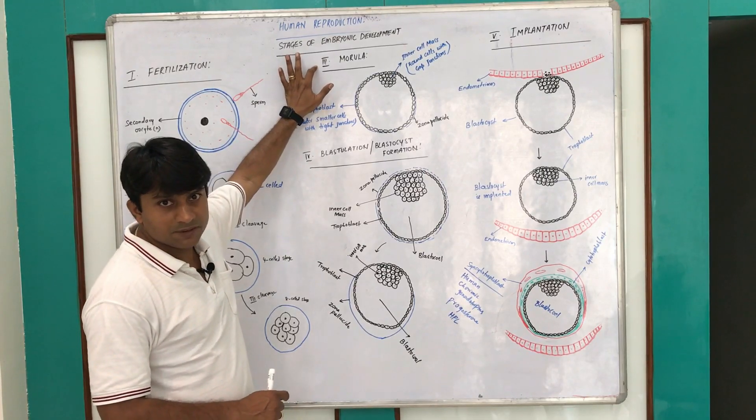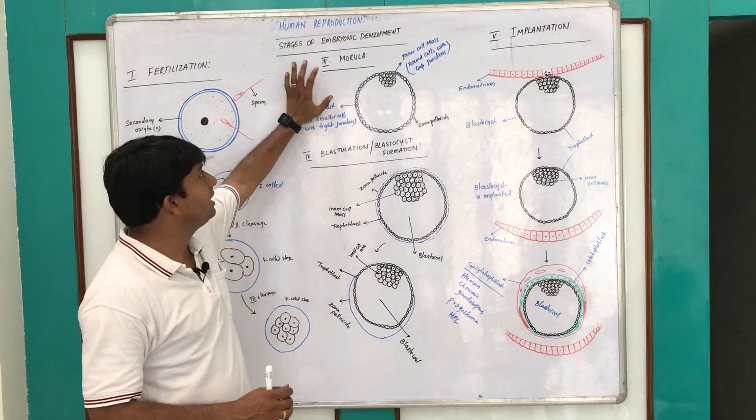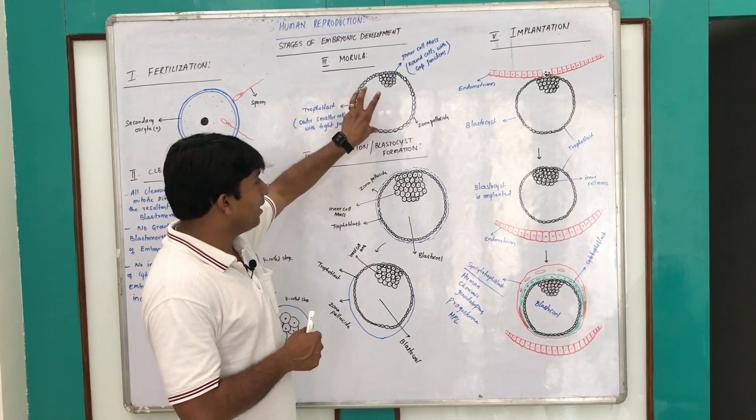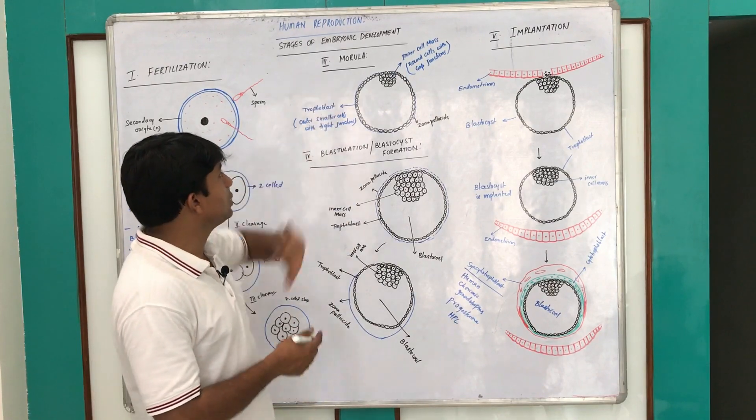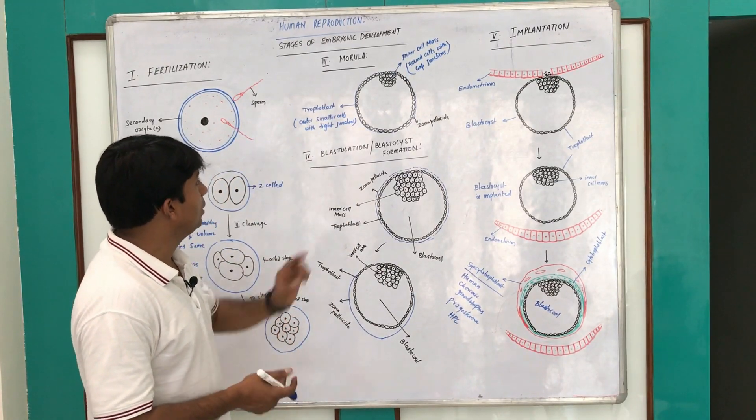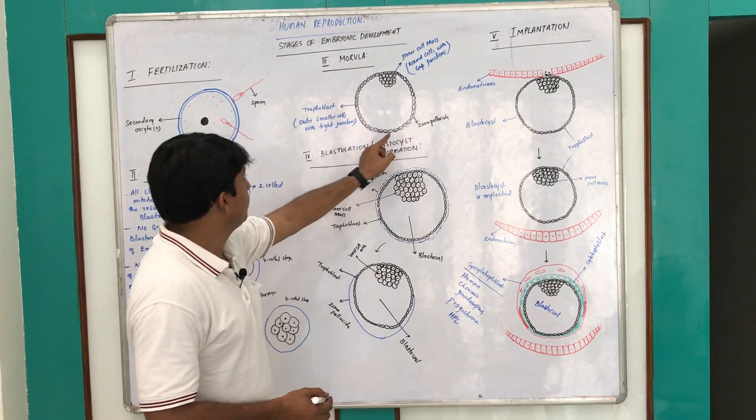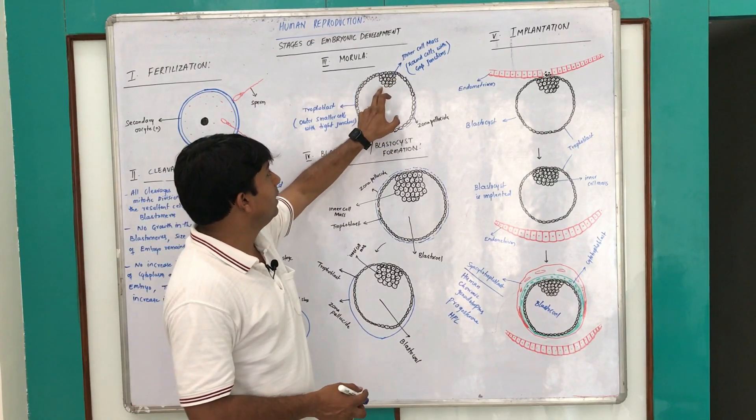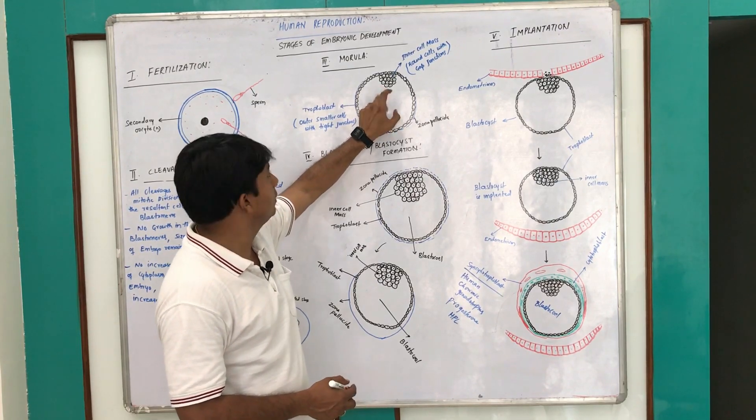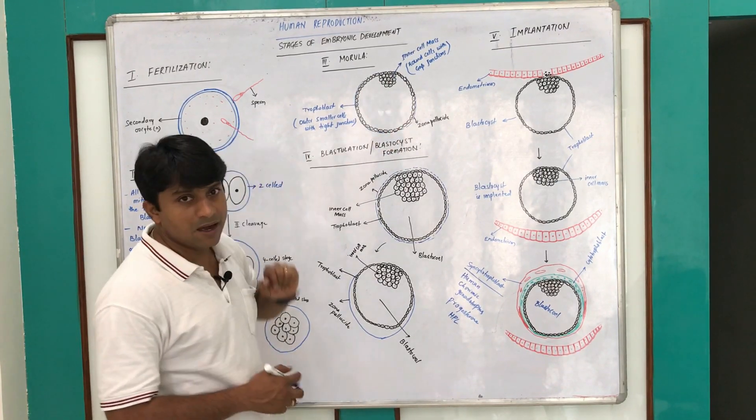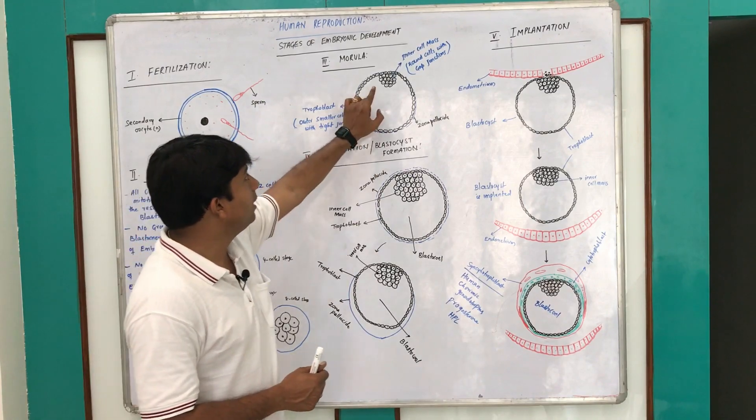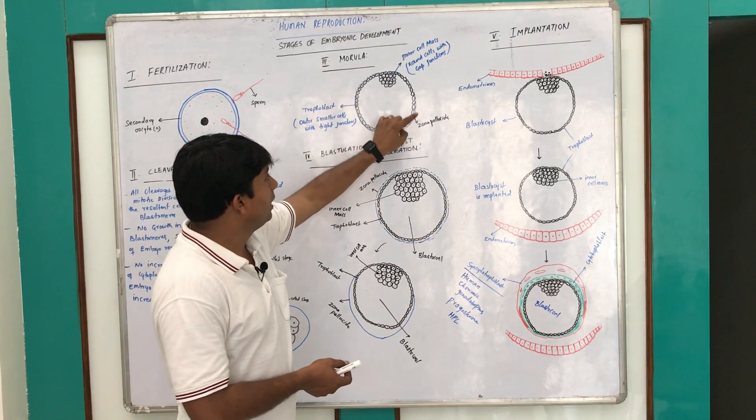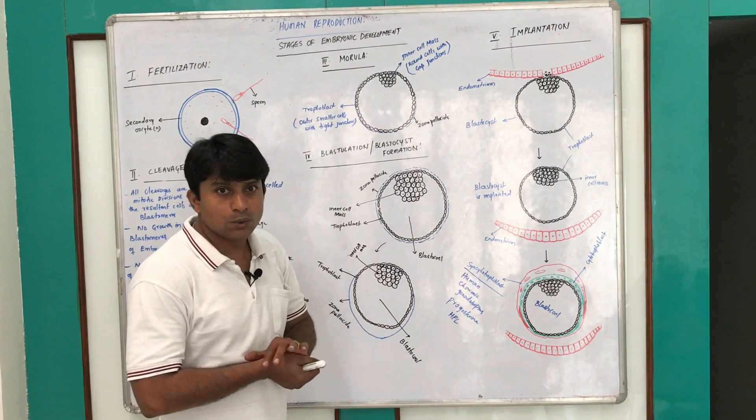Cleavages will follow to the next stage which is called morula. The 8 to 16 celled stage is called morula. In this stage, the cells are arranged and resemble a mulberry. The outer cells are smaller cells called trophoblast, and the round cells are inner cell mass. The trophoblast cells have tight junctions and inner cell mass has gap junctions. In the morula stage, the embryo is still surrounded by zona pellucida.